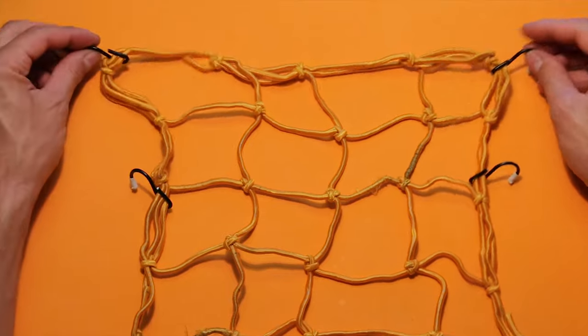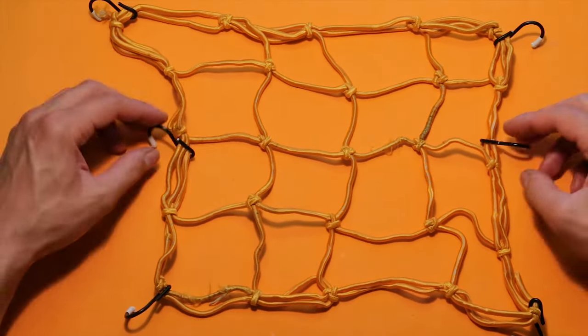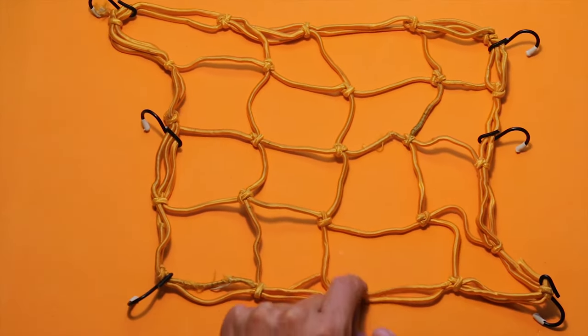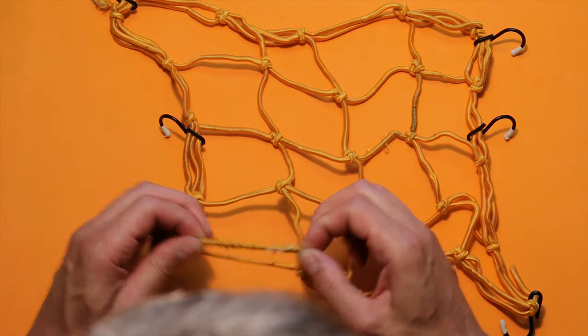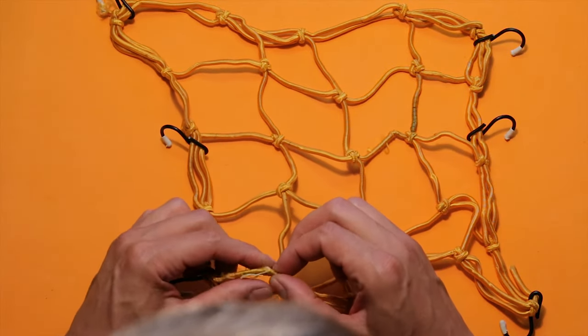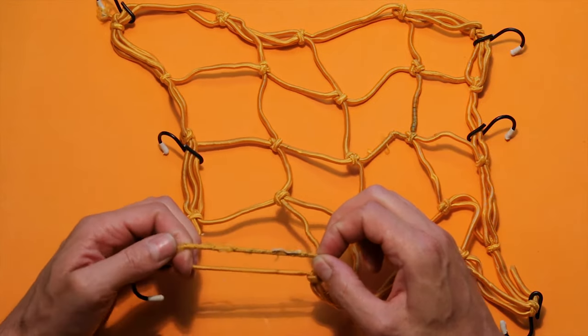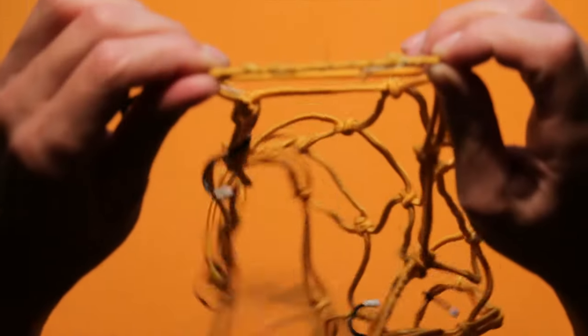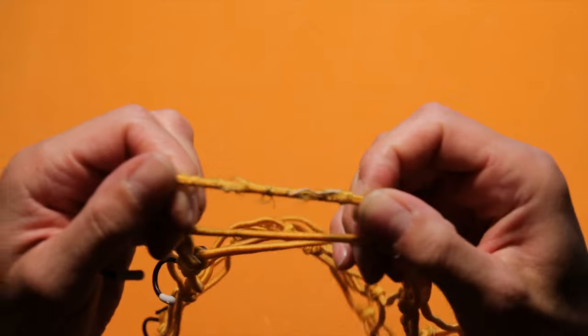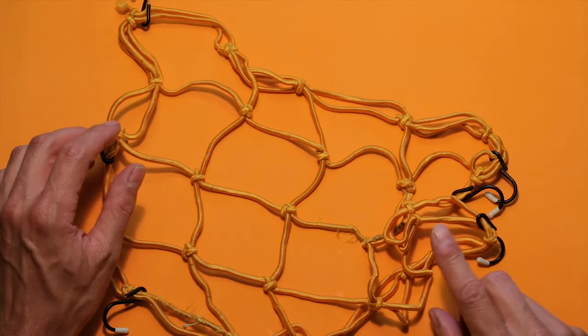It has six hooks where you can hook it around your bike and then put some stuff under here. This is bad quality. Let's go and see.